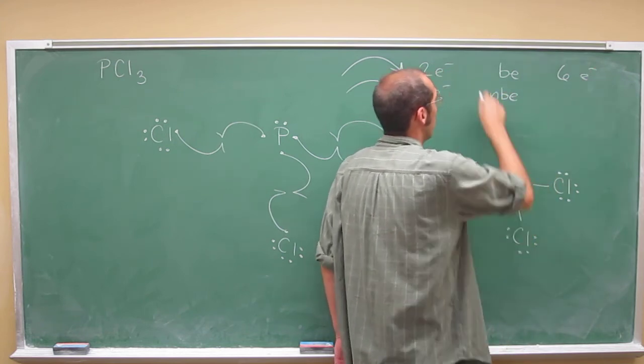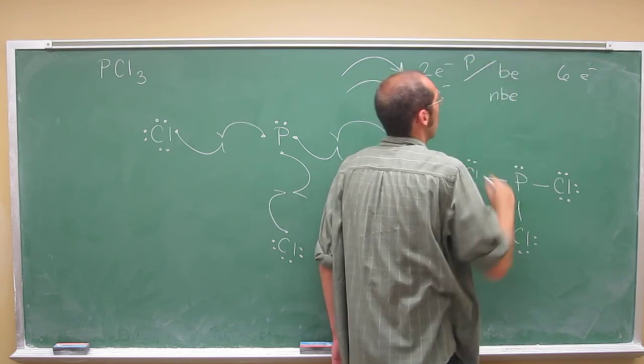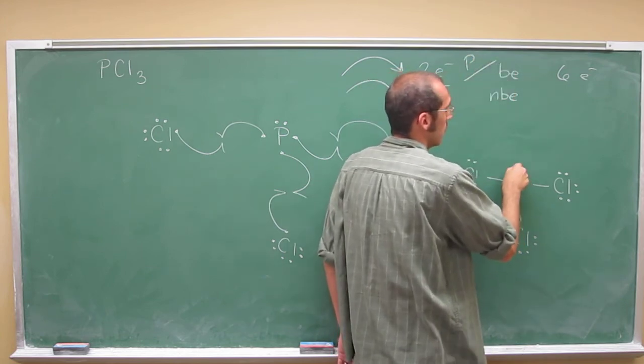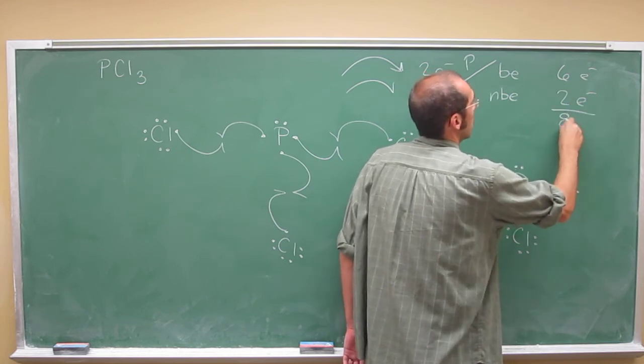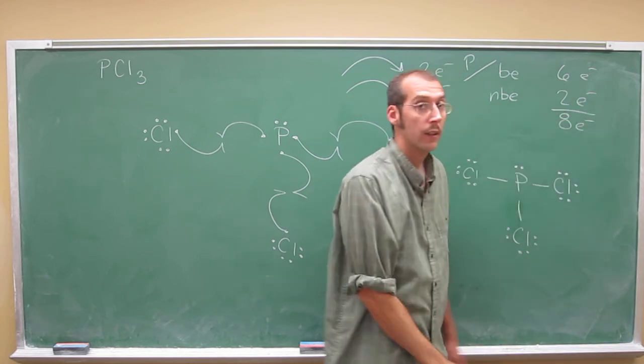Non-bonding electrons. Oh, this is around the central atom. Of phosphorus, we'll say. Right? Non-bonding electrons of one, two. So again, that adds up to eight electrons. Full octet.